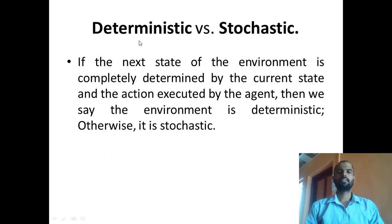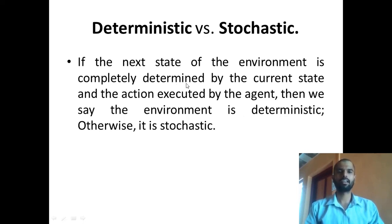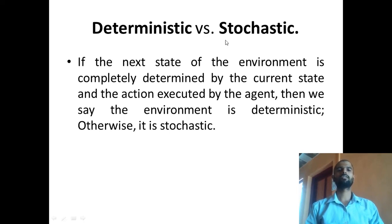Next is deterministic versus stochastic. If the next state of the environment is completely determined by the current state and the action executed by the agent, then we say the environment is deterministic. So, the next state of the environment is completely determined by the current state and the action executed. Otherwise, we can call it a stochastic environment.